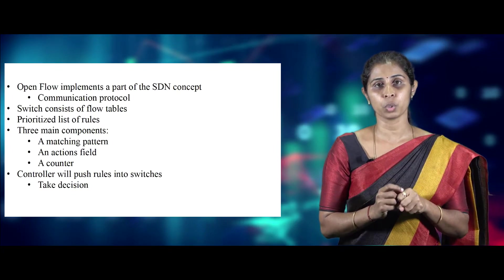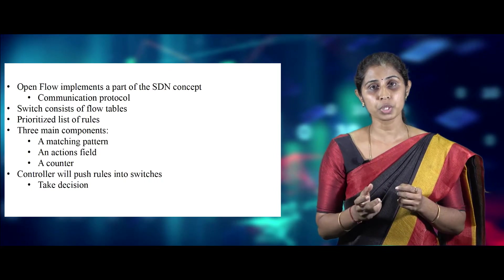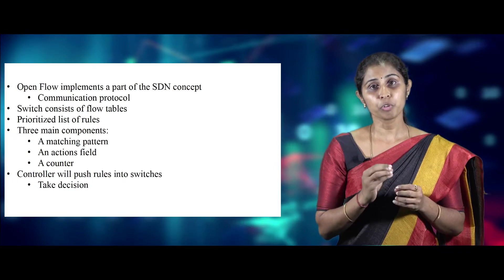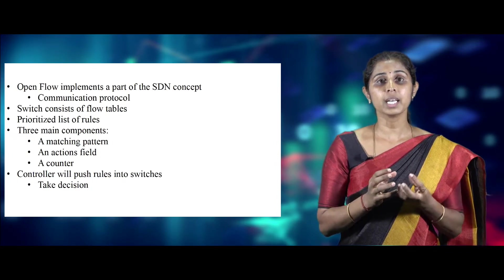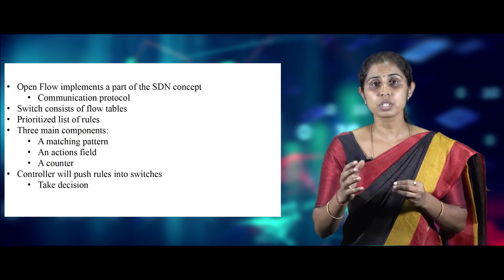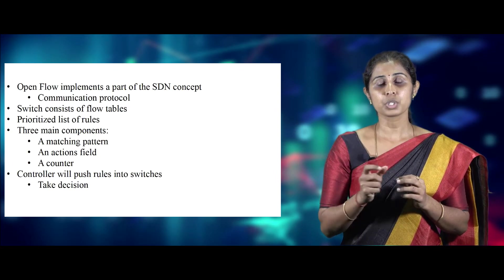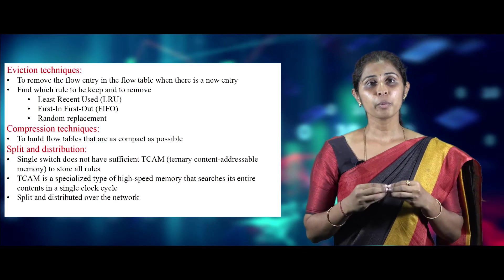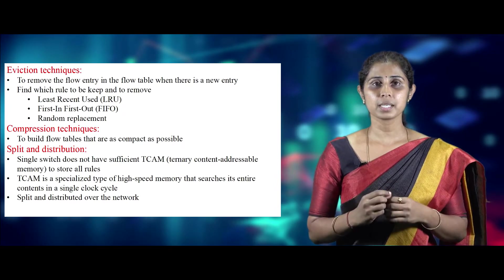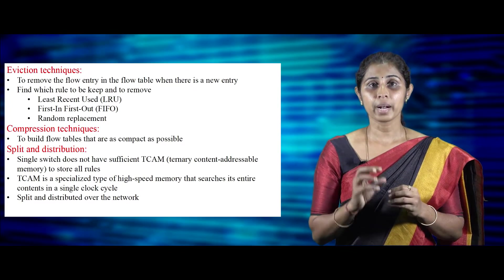In OpenFlow, the forwarding plane devices are called OpenFlow switches, and all forwarding decisions are flow-based. An OpenFlow switch consists of flow tables, each containing a list of rules that determine how packets are to be processed by the switch. A rule consists of three main components: a matching pattern, an action field, and a counter. Due to limited memory capacity, not all rules might be stored in the flow table of the switch.